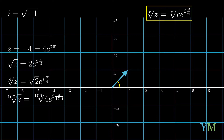We can even look at the 100th root of this complex number. Using polar presentation, it's quite easy: we receive the 100th root of 4, and our angle would be pi over 100. We can visualize that this number will be very, very close to the number 1 — its angle is very close to 0 and its length is also very close to 1. Doing the same thing with algebraic presentation would be very difficult.